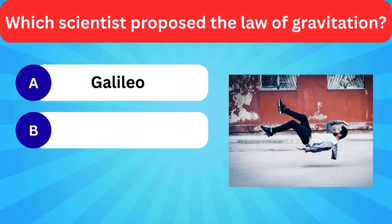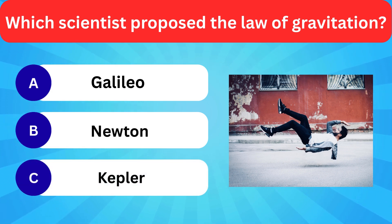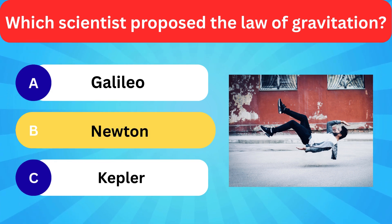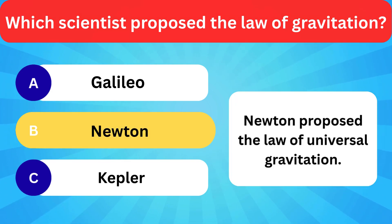Which scientist proposed the law of gravitation? Options: Galileo, Newton, Kepler. Correct answer is Newton. Newton proposed the law of universal gravitation.